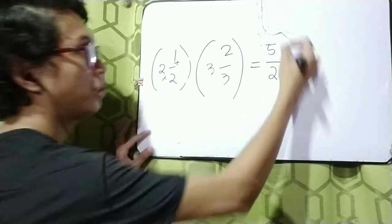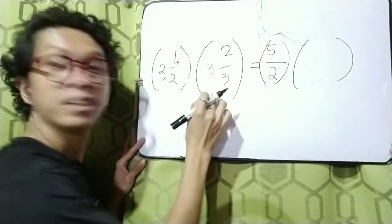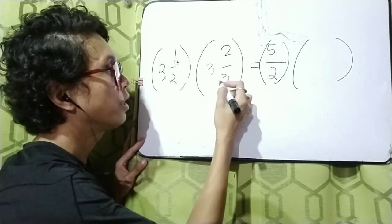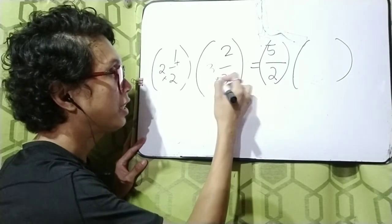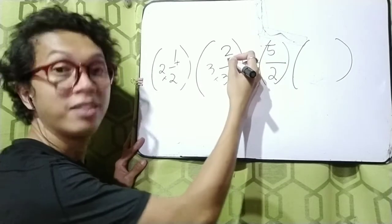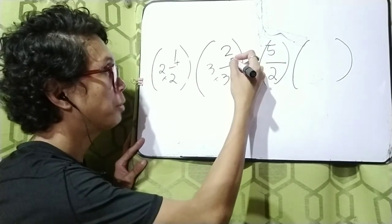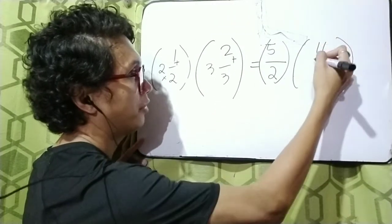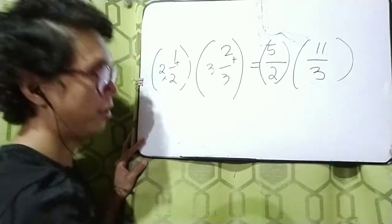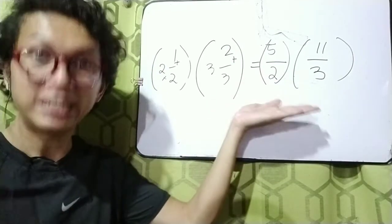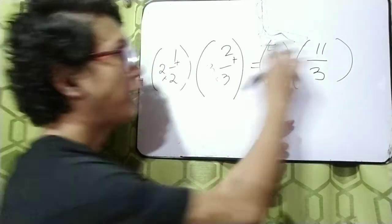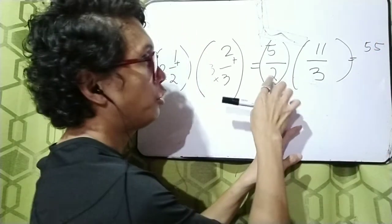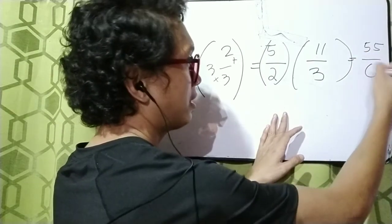Next, we transform the second fraction. Again, multiply the denominator by the whole number: 3 times 3 is 9. Then add the numerator: 9 plus 2 is 11. So we get 11 over 3 — just copy the denominator. Now we can easily multiply them: 5 times 11 is 55, and 2 times 3 is 6.